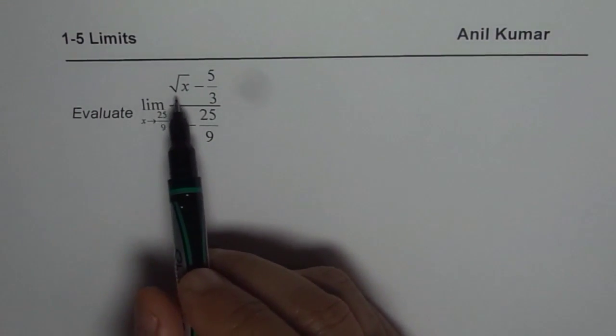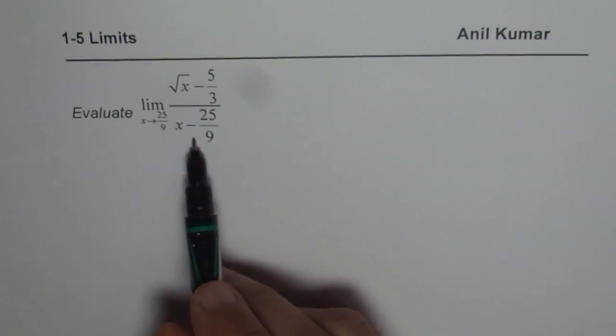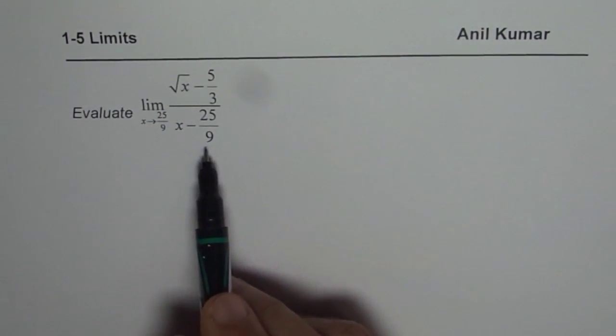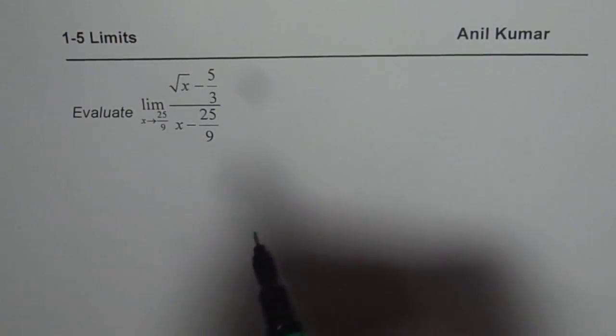for the function square root of x minus 5 over 3 divided by x minus 25 over 9. If I substitute 25 over 9, what do I get?